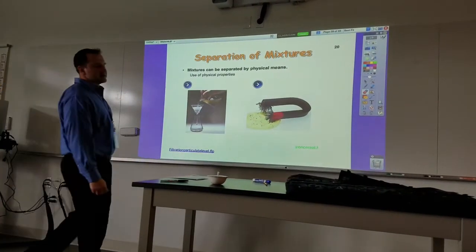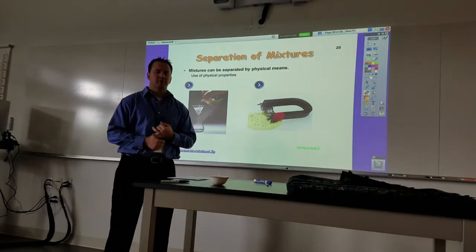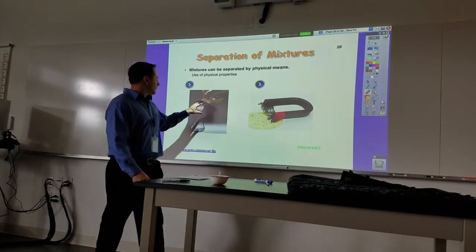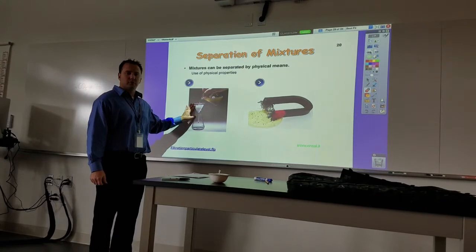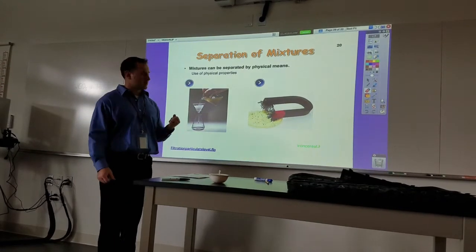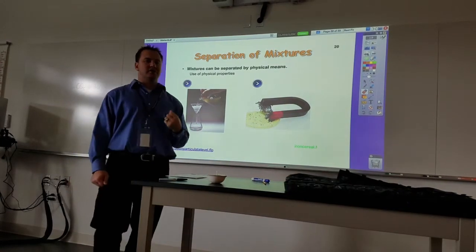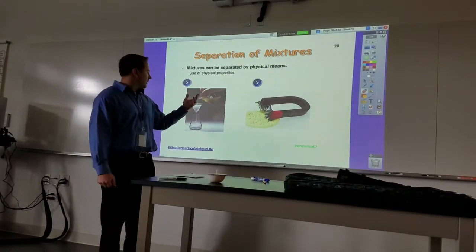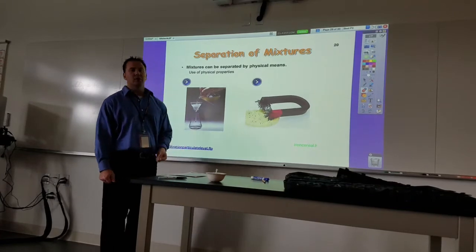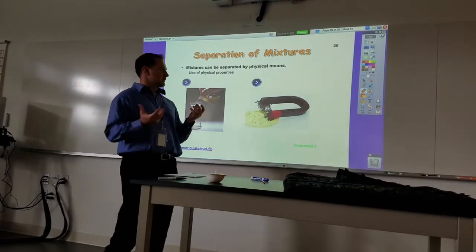A couple of other ways we can separate mixtures by physical means would be by passing them through a filter. We'll learn how to do a filtration tomorrow. In filtration we separate mixtures based on the sizes of the particles. Particles that are small enough will pass through, and particles that are too big get held behind.